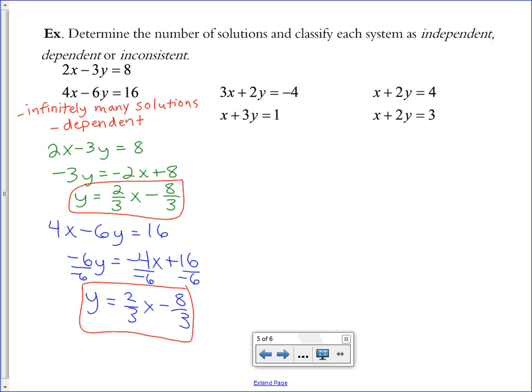Let's try the next one. We're going to isolate y again in both equations. y equals negative 3/2x minus 2.